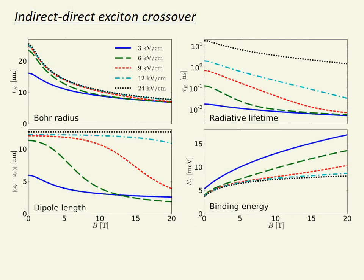These are shown here as a function of magnetic field at different electric fields. Of particular interest is the crossover of the ground state from an indirect to a direct exciton with increasing magnetic field, and this is characterized by the drop in dipole length.